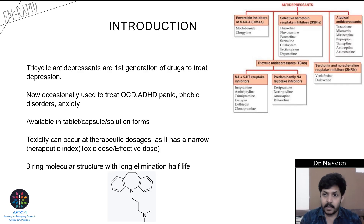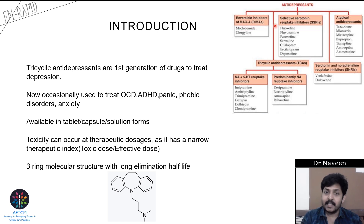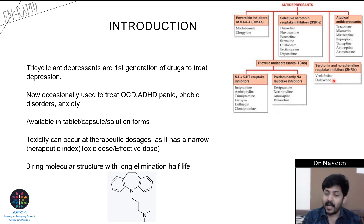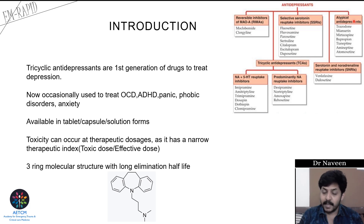Before moving to the topic, I will give a brief idea regarding the classification of antidepressants. Antidepressants are basically classified into five: reversible inhibitors of monoamine oxidase A (RIMAs), tricyclic antidepressants (TCAs), selective serotonin reuptake inhibitors (SSRIs), serotonin and noradrenaline reuptake inhibitors (SNRIs), and atypical antidepressants.